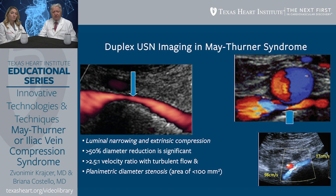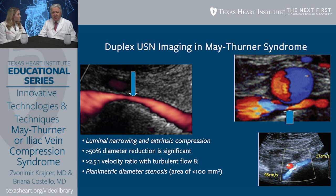Moving forward with duplex ultrasound, we look at extrinsic compression seen on color Doppler. The abnormal values include more than 50 percent diameter reduction, which is considered significant, as well as velocity ratio changes greater than 2.5-to-1 between the normal and abnormal segment, and turbulent flow with a mosaic pattern. We also measure velocities proximally and distally, and planimetry is very important for identifying the severity of stenosis — measured in the narrowed segment as well as proximally and distally.